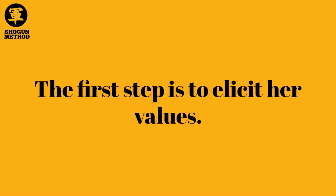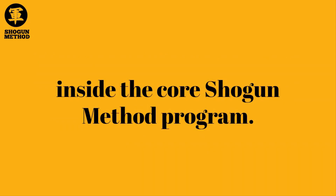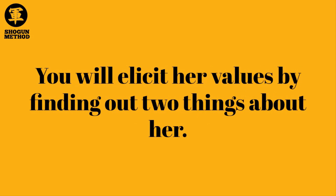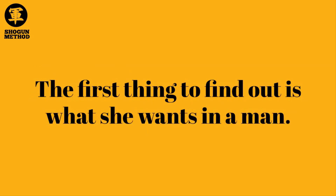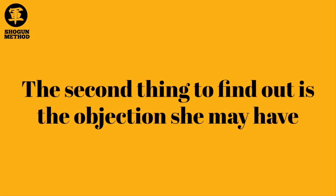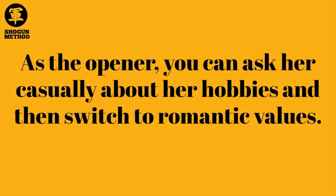The first step is to elicit her values. Value elicitation is Shogun Method's bread and butter, and we go deep into the concept inside the Core Shogun Method program. You will elicit her values by finding out two things: what she wants in a man — her romantic values — and the objections she may have if she meets another man who shares her romantic values better than her boyfriend. As an opener, ask her casually about her hobbies and then switch to romantic values.